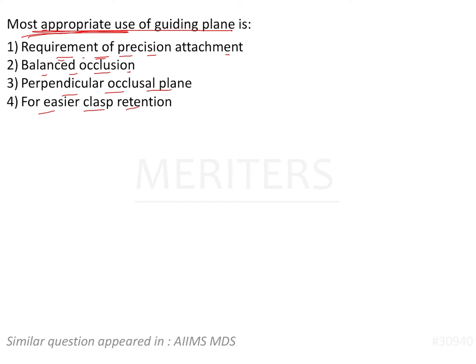The requirement of a precision attachment is the function of a direct retainer. Direct retainers can be extra coronal or intra coronal. Intra coronal retainers can be precision attachments, and extra coronal precision attachments are also possible.